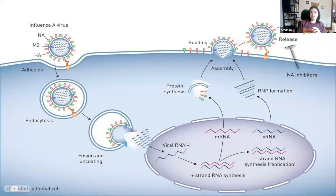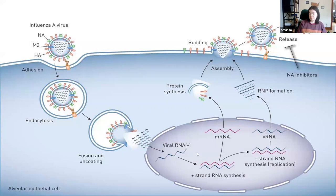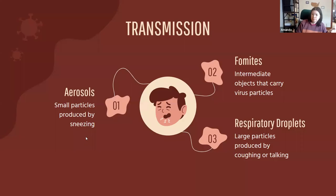The way influenza infects host cells is through adhesion. It's essentially engulfed by the cell, then releases its viral RNA — this negative-sense segmented RNA — into the nucleus where it is replicated. It then reforms and makes little baby viruses that bud off and are released back into the host.